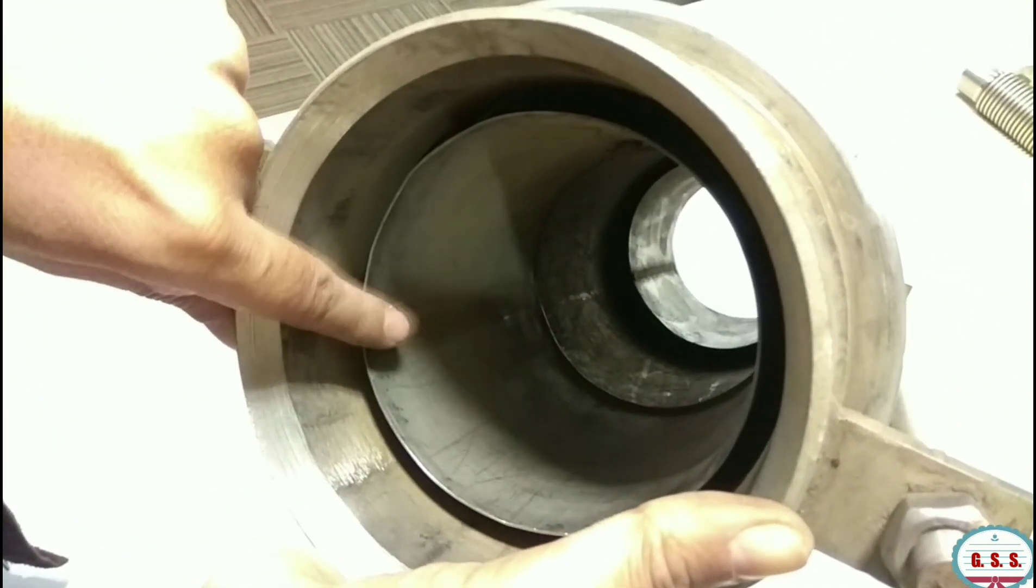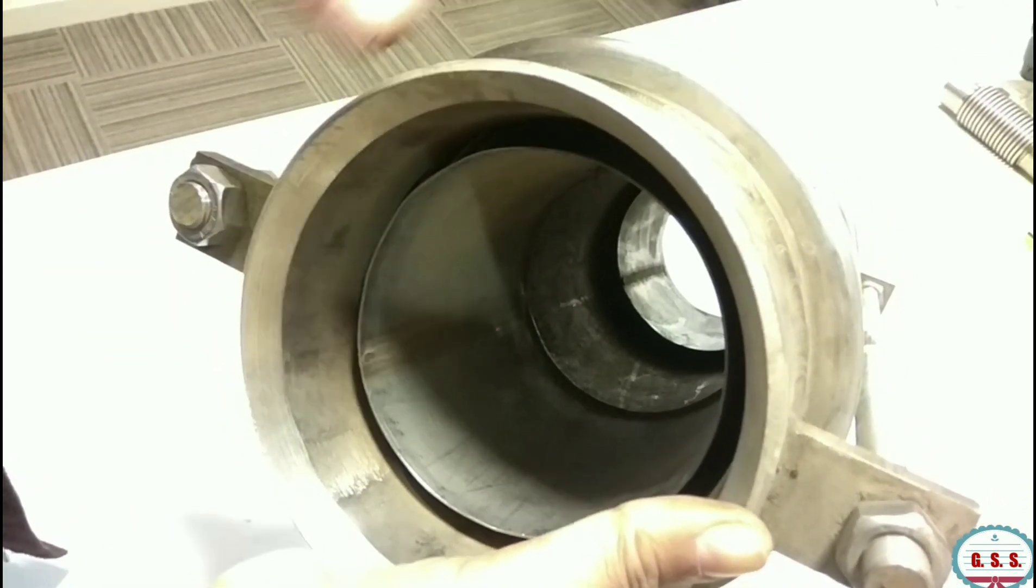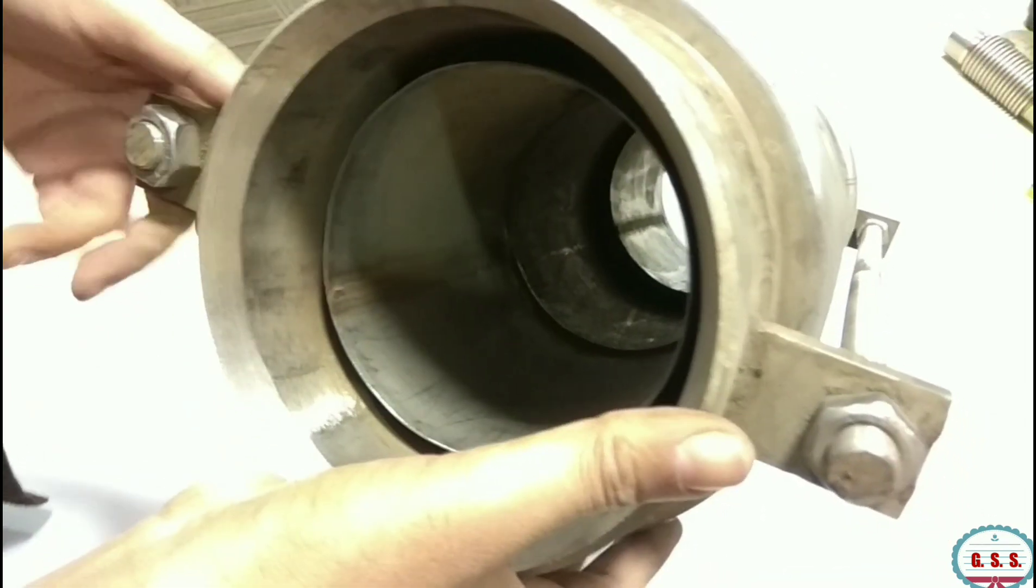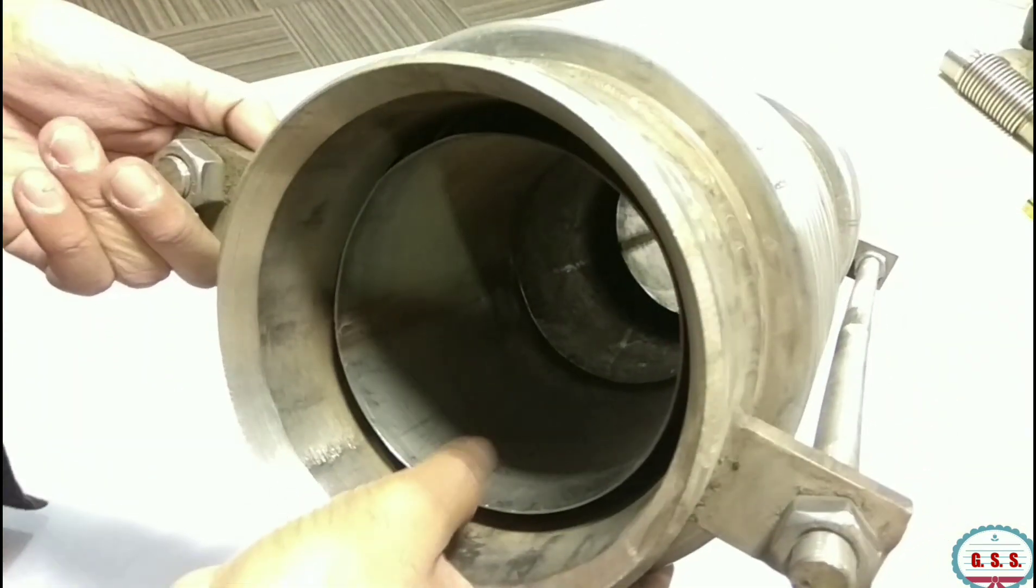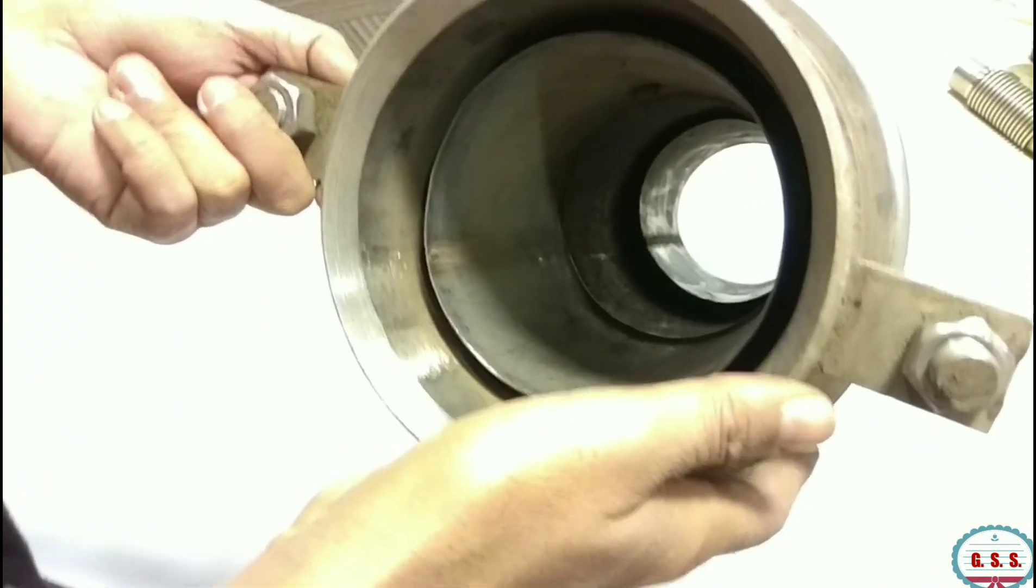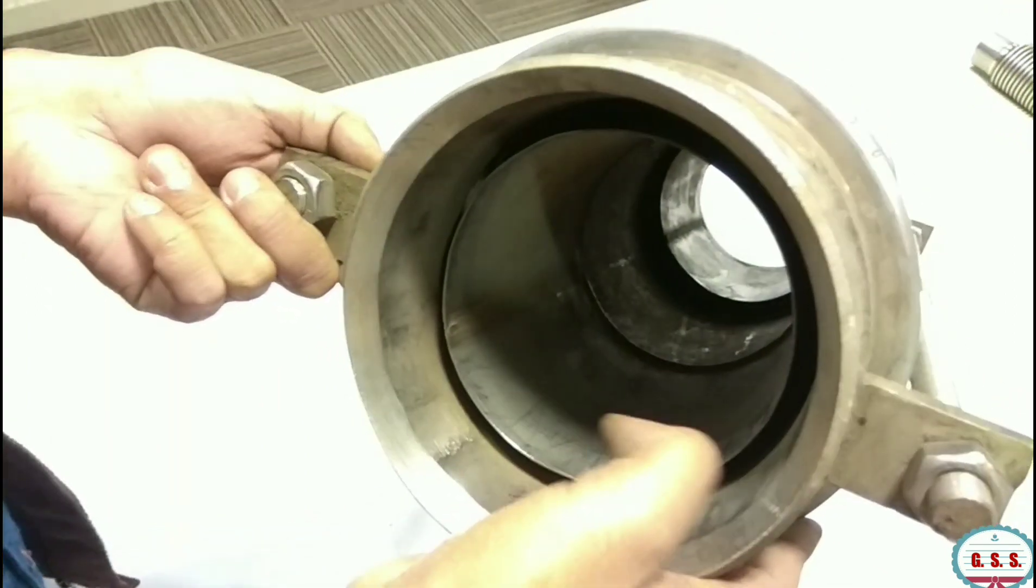This internal sleeve has been provided to protect the convolution. When any fluid passes through the bellows at high velocity, then it will hit the convolution. That's why this internal sleeve has been provided so that fluid will not hit the bellows convolution inside.